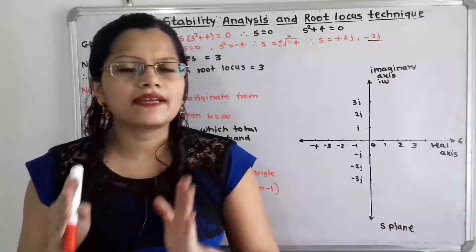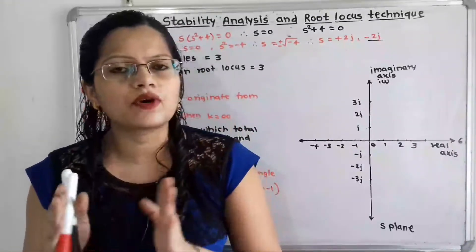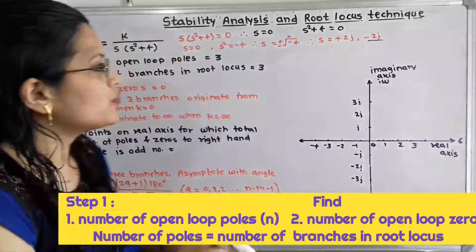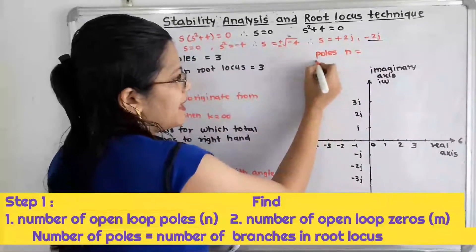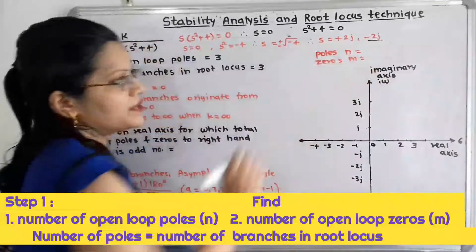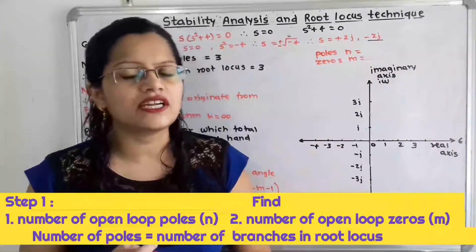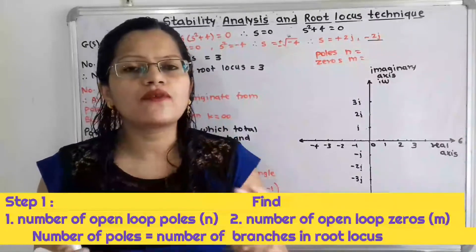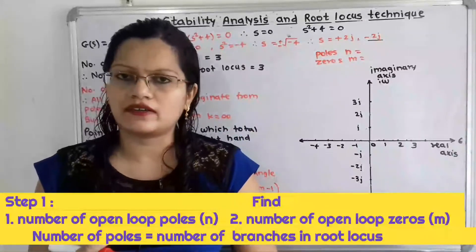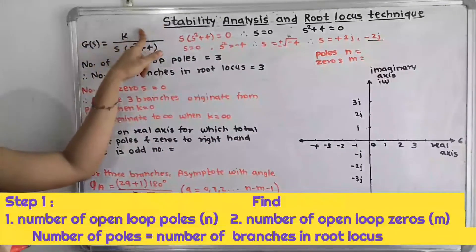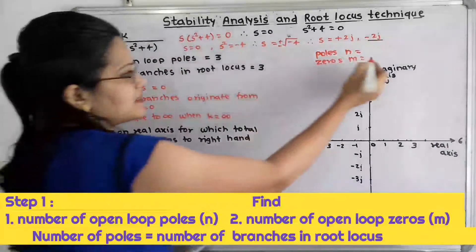We will follow a step-by-step procedure. The first step is to find the number of poles and number of zeros. We use N for the number of poles and M for the number of zeros. To find zeros, we look at the numerator — there is no equation in terms of S in the numerator, so the number of zeros M = 0.